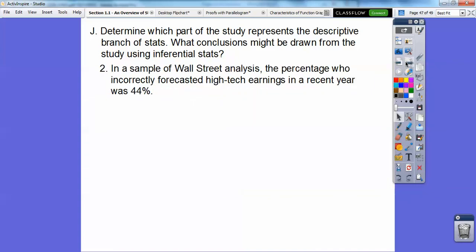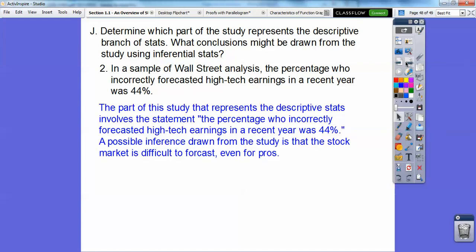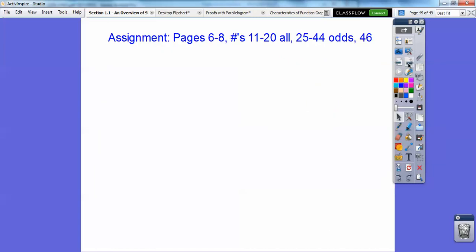Here's another one. In a sample of Wall Street analysts, the percentage who incorrectly forecasted high-tech earnings in a recent year was 44%. The descriptive part involves the statement where it says the percentage who incorrectly forecasted high-tech earnings in recent years was 44%. Can you see how this is describing the statistics? A possible inference or educated guess that we can draw from this study is that the stock market is difficult to forecast, even for the pros. They often make mistakes. If you are in my class, you're going to be seeing that as your assignment. Take care.